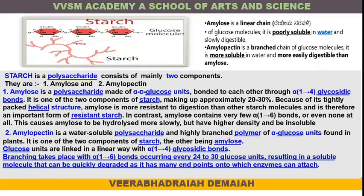Amylopectin is a water-soluble polysaccharide and highly branched polymer of glucose units found in plants. It is one of the two components of starch, the other being amylose. Glucose units are linked in a linear way with alpha-1,4 glycosidic bonds, and branching takes place with alpha-1,6 bonds occurring every 24 to 30 glucose units, resulting in a soluble molecule that can be quickly degraded as it has many endpoints onto which enzymes can attach.